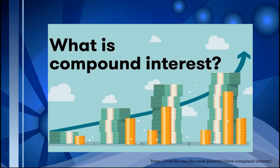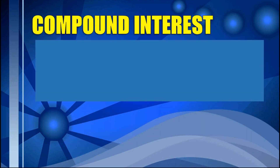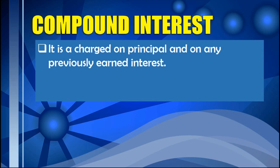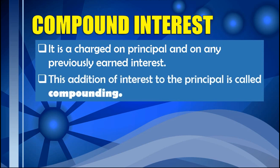What is compound interest? When we say compound interest, it refers to the charge on principal and on any previously earned interest. Meaning to say, an interest is added to the principal, and that interest that has been added also earns interest. In compound interest, the payment gets larger over time, and this addition of interest to the principal is called compounding.